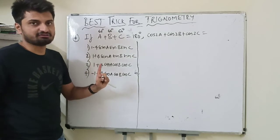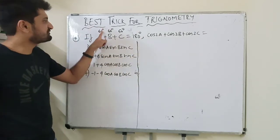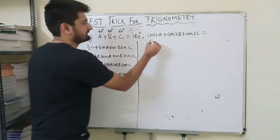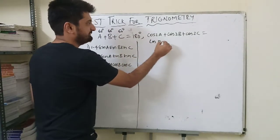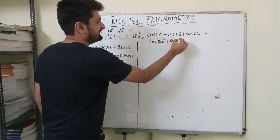Now I will substitute these values in the question. So this would be cos120 (2 into 60 will be 120) plus cos120 plus cos120.